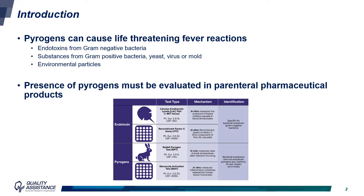Pyrogens are substances that can cause life-threatening fever reactions. The main source of pyrogens is endotoxins that come from gram-negative bacteria. However, substances coming from gram-positive bacteria, yeast, viruses or molds, as well as environmental particles, can also induce pyrogenic effects. For these reasons, the presence of pyrogens must be evaluated in parenteral pharmaceutical products.